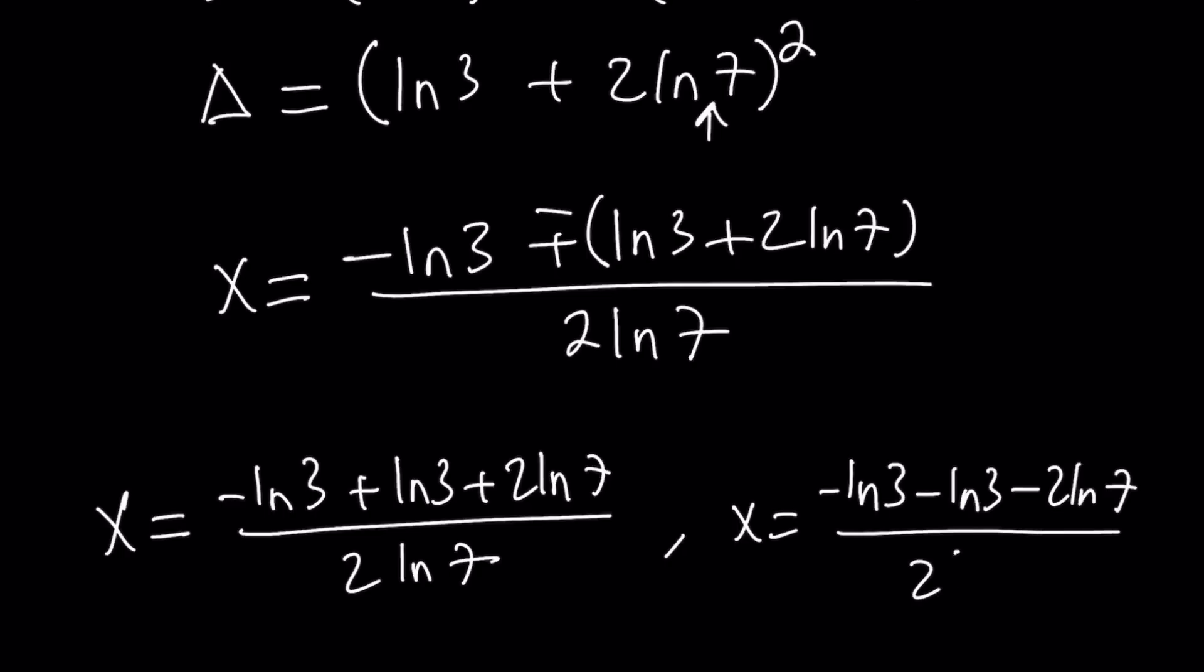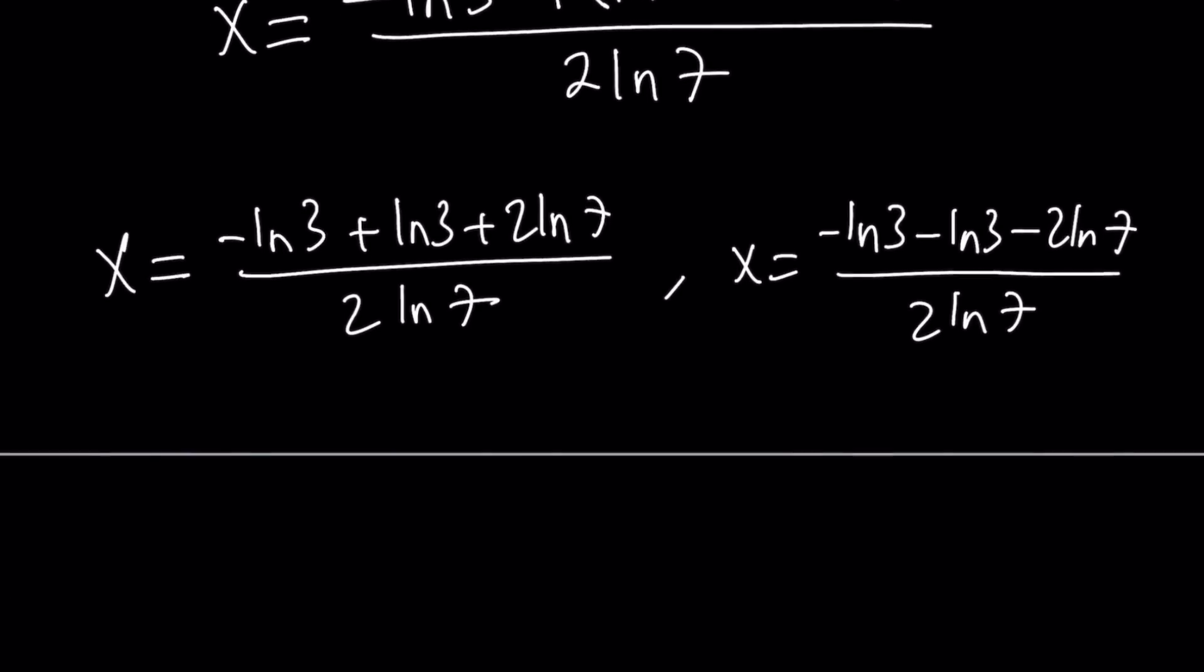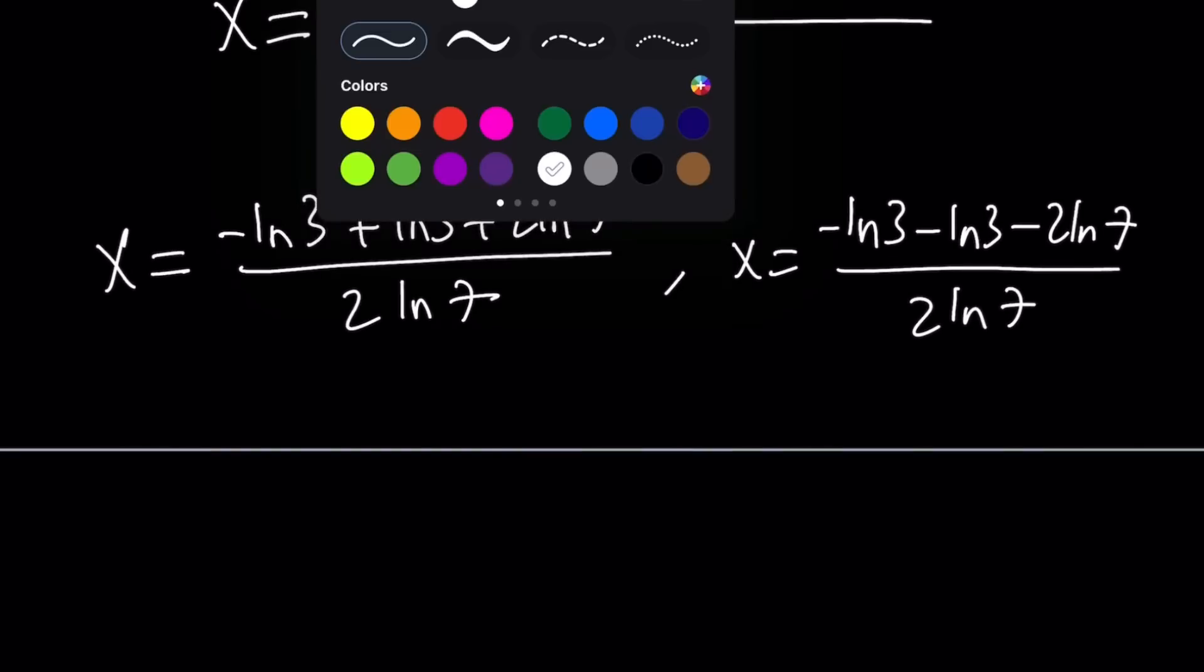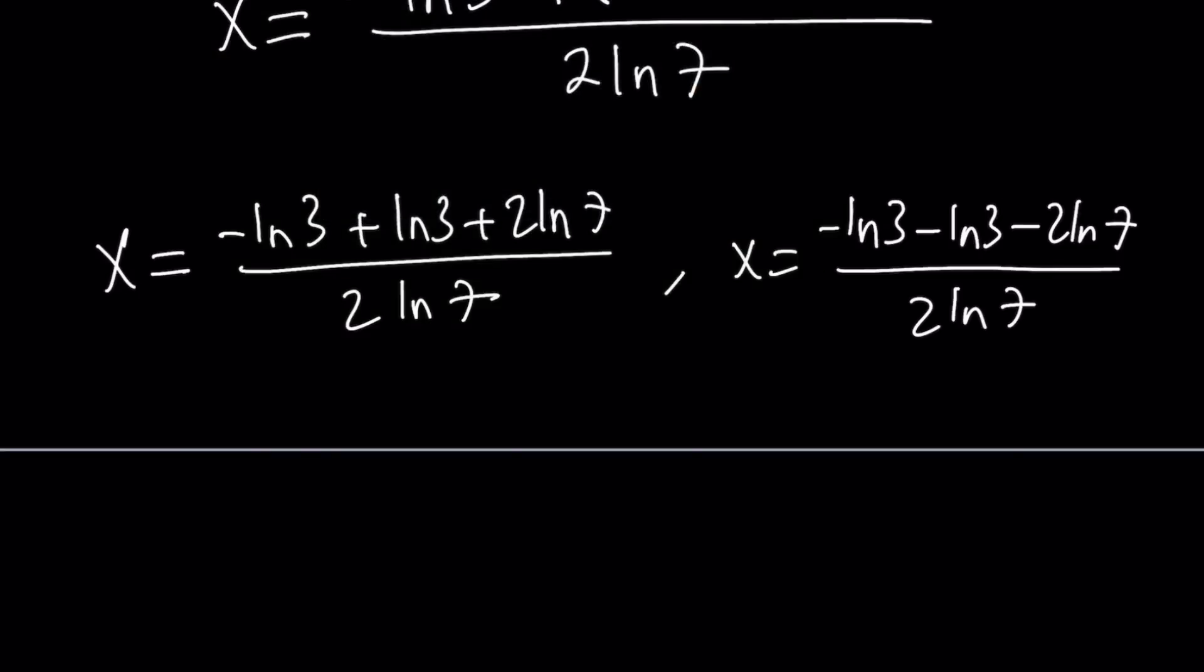Divide by 2 ln 7. And the other solution is going to be x equals negative ln 3 minus ln 3 minus 2 ln 7. So negative, right? 2 ln 7. Okay. Let's go ahead and simplify the first one first. So ln 3 cancels out. We get 2 ln 7 divided by 2 ln 7. Everything cancels out. And we end up with x equals 1. Yes, that was the root that I didn't tell you about. One of the solutions is x equals 1. You probably guessed it at the very beginning because it's kind of easy to guess that x equals 1 works.